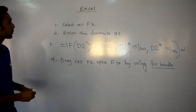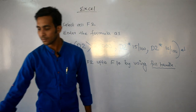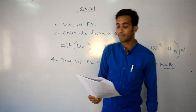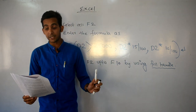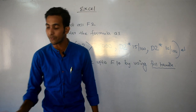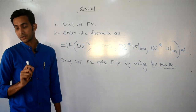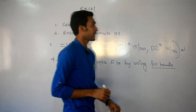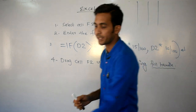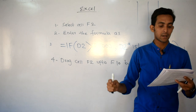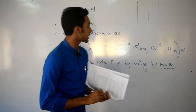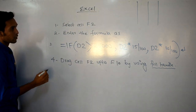So first we found bonus, then allowance. Now the 3rd question: find the average salary for only the purchase department in cell C12. Here C12 में सिर्फ purchase department का average find करने को बोला है।